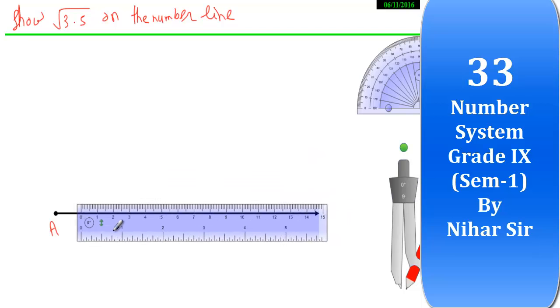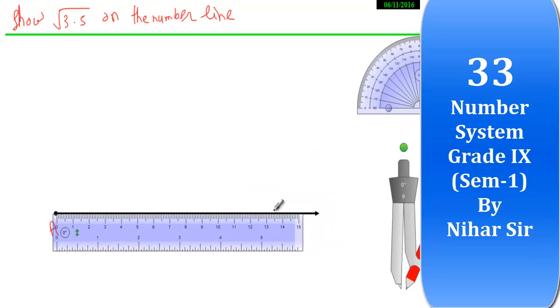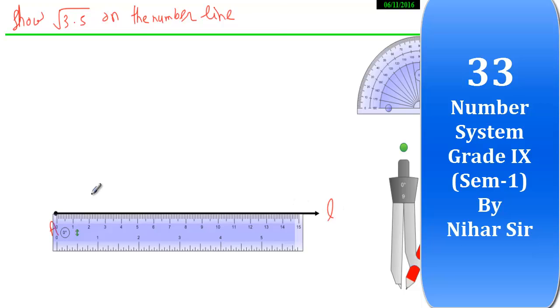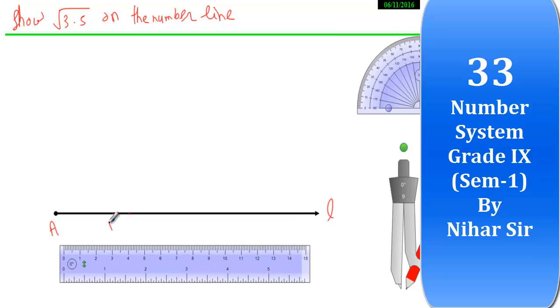Then I will take the point B on this number line. Let me name this number line as L such that AB equals to 3.5. So here it will be 3.5 and I will take point C that is 1 centimeter away from B. So here at 4.5 I will take the point C. So here my point B, here my point C.